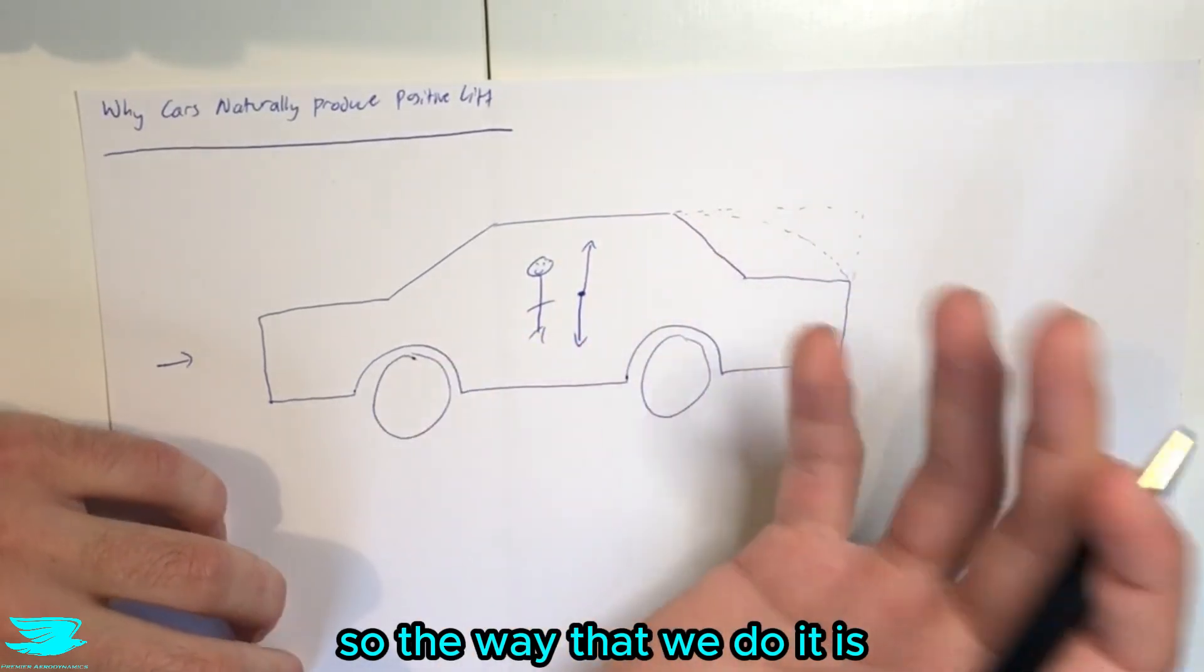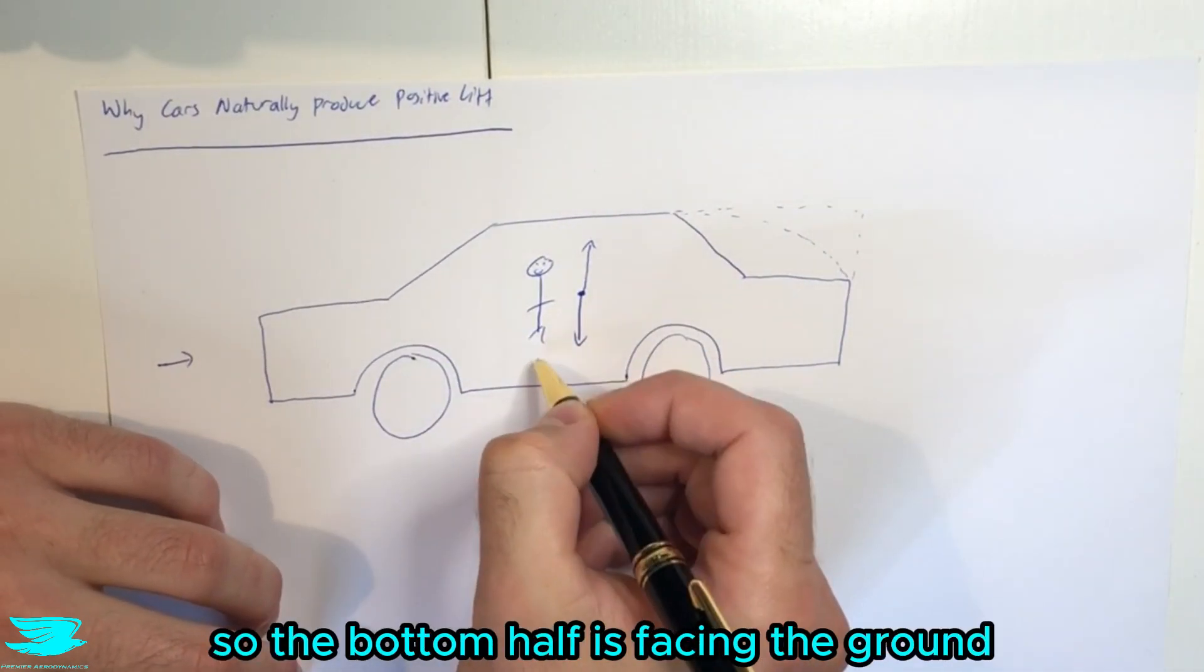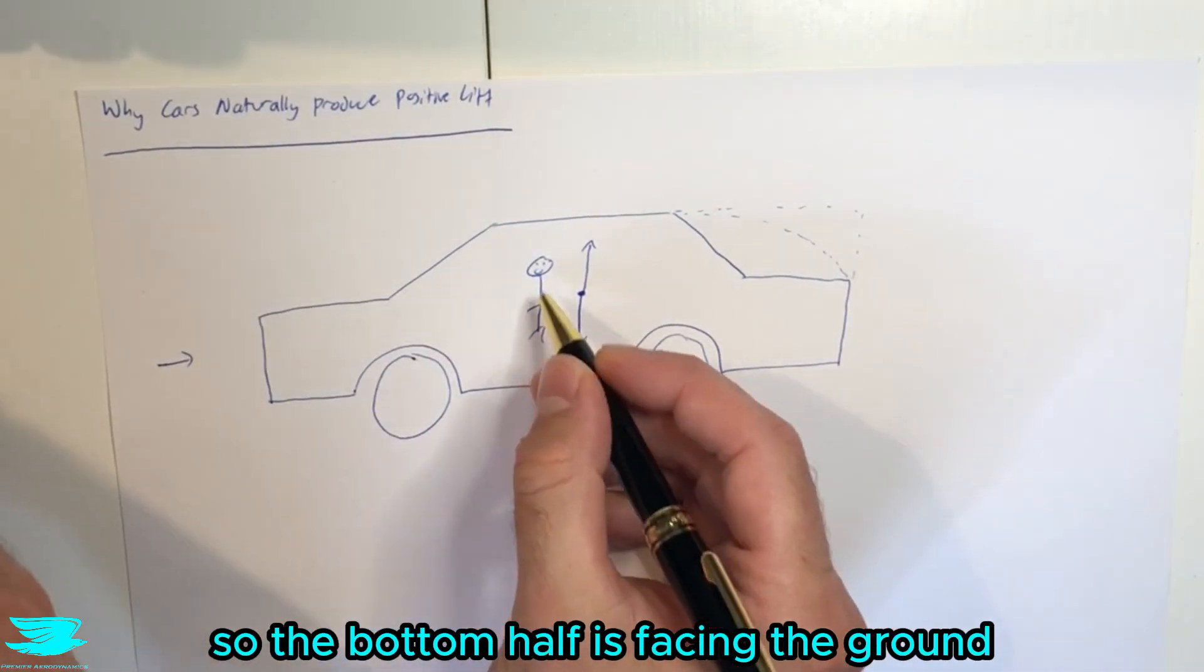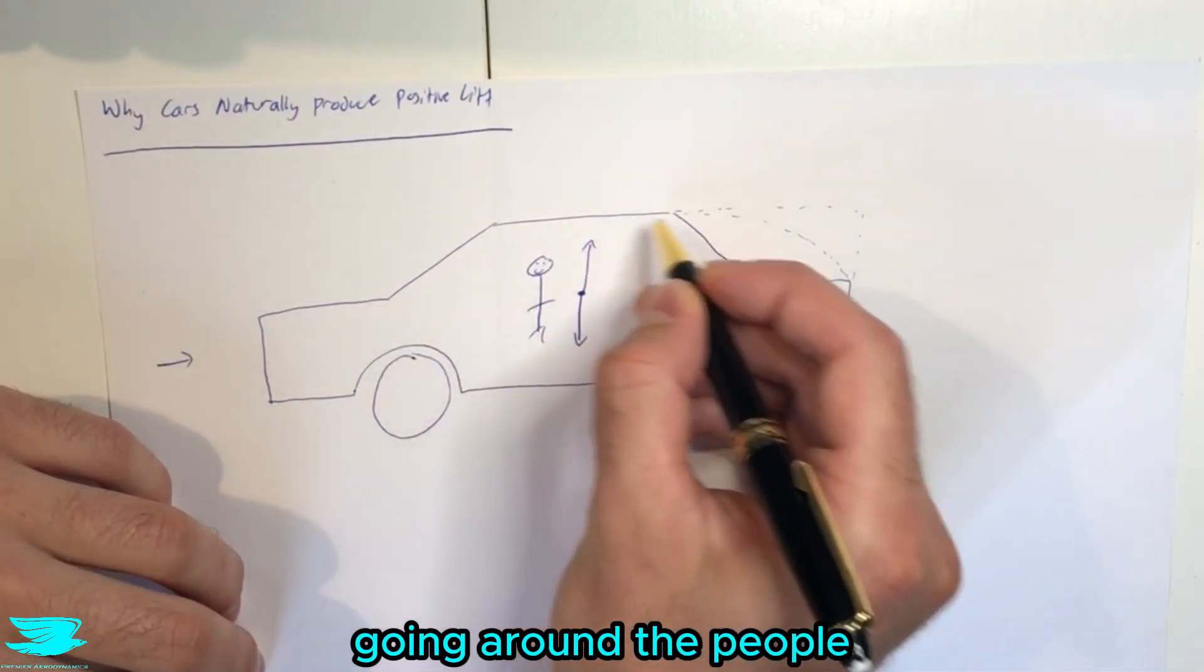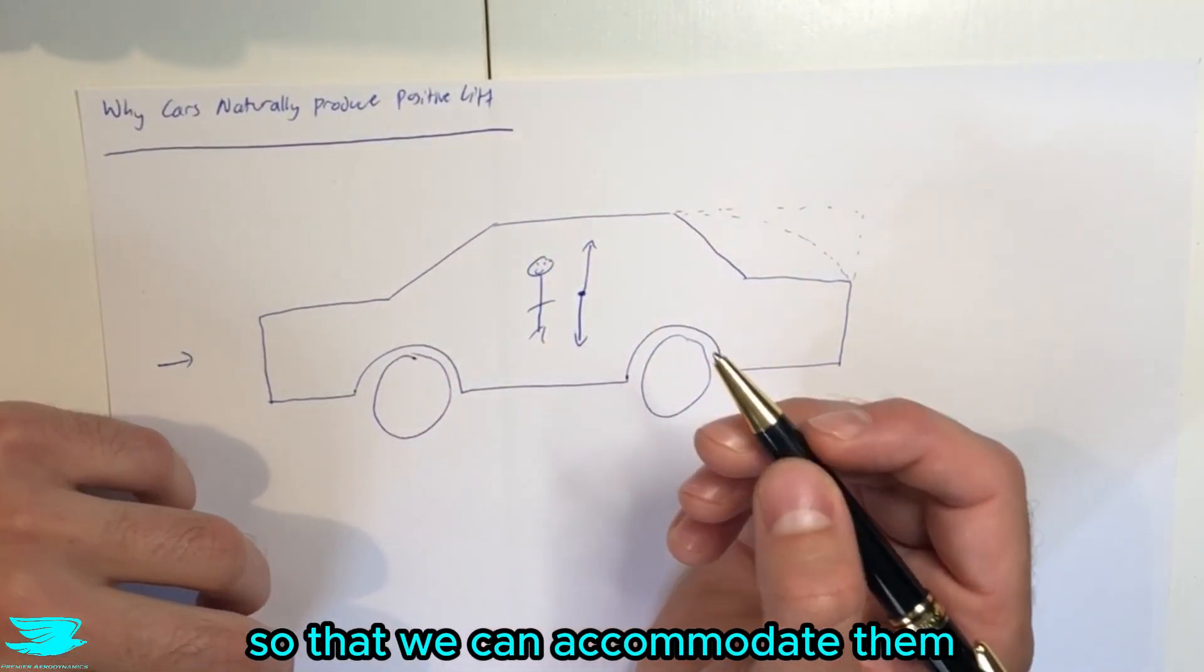So the way that we do it is we have them sitting down. The bottom half is facing the ground and the top half is facing the sky, which is normal for us. As such, we need to have the roof going around the people so that we can accommodate them.